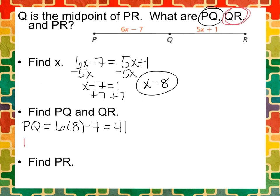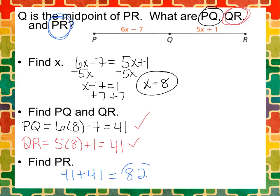We'll do QR is equal to 5 multiplied by 8 plus 1, which is going to give us 41 as well. So it checks off. It's awesome. And now we're going to add the two numbers together. And we'll be able to find out the length of PR, which is going to be 82. And we're done.